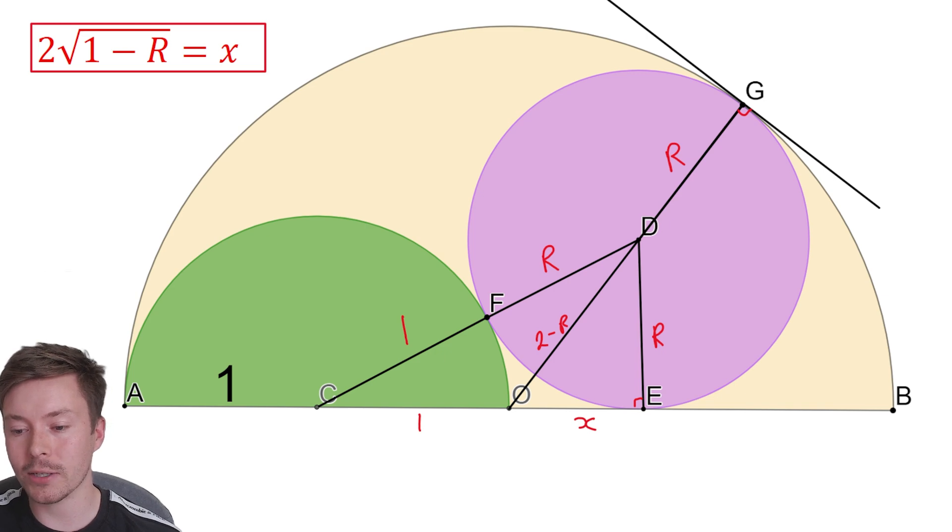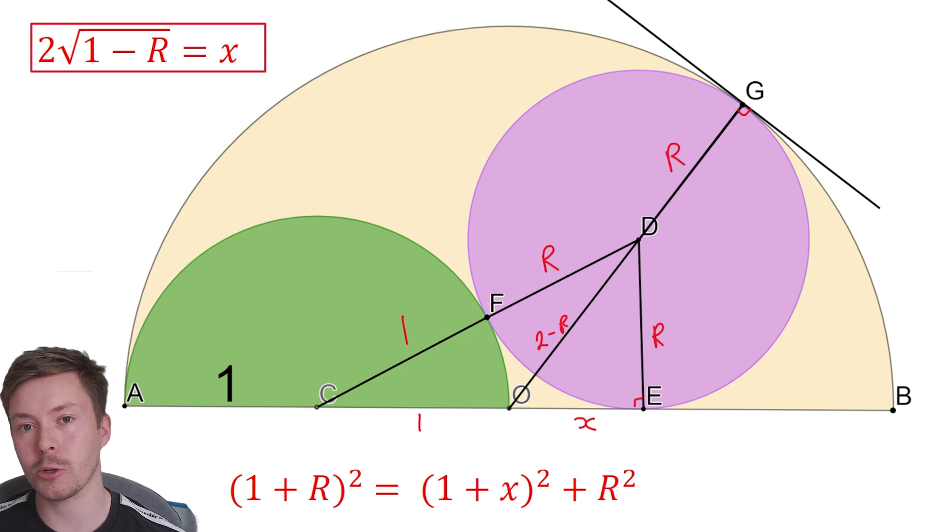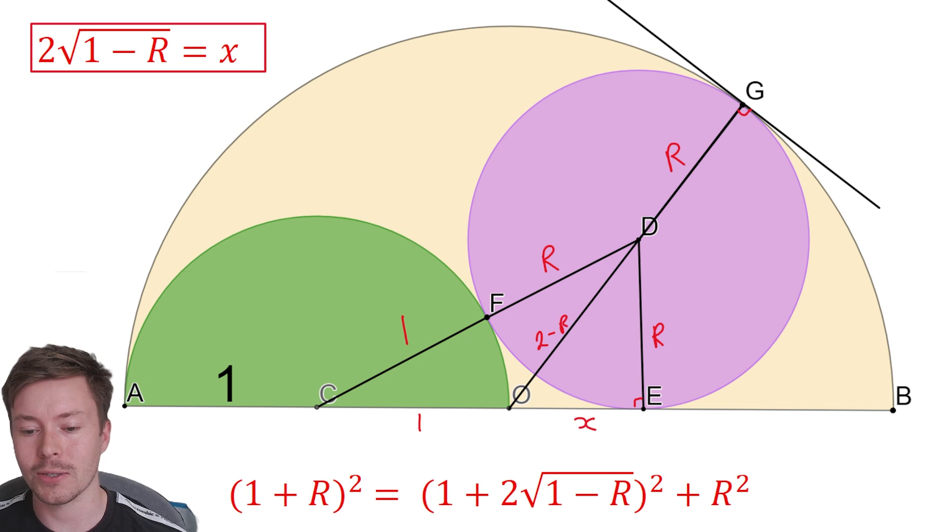I could replace the X in my diagram with that, but I'm not going to just yet. What I am going to do is Pythagoras again, but this time with triangle CED. My hypotenuse, 1 plus R squared, is equal to 1 plus X squared plus R squared. From there, I'm going to replace the X with what I worked out X to be in terms of R. That gives me 1 plus R all squared equals 1 plus 2 square root 1 minus R all squared plus R squared. It looks quite messy at the moment, but at least everything is in terms of R, so we should be able to solve that.